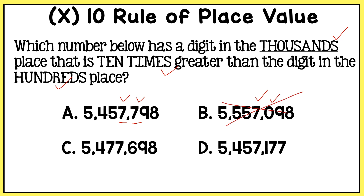In choice C, I have a seven in the thousands place but a six in the hundreds place — that one will not work either. In choice D, I have a seven in the thousands place but a one in the hundreds place — I do not have two digits that are the same and next to each other. So is it true that the seven in the thousands place is 10 times greater than the seven in the hundreds place? Yes, this is true of A: 5,457,798.